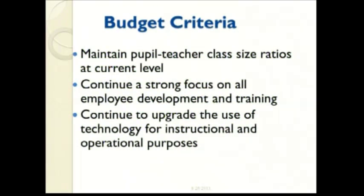The school board approves new items that come into the budget, which generally are on a prioritized basis. Over the years, the school board has established criteria that it asks administration to follow in developing the budget. These include maintaining appropriate student-teacher ratio in the classroom, committing to the continual improvement and development of staff, and enhancing the use of technology throughout the district.